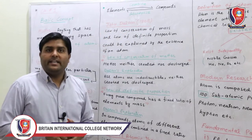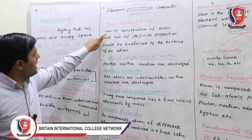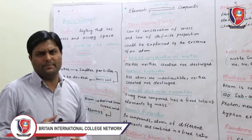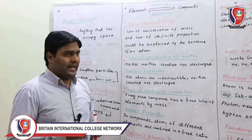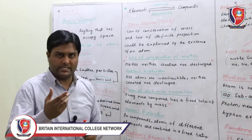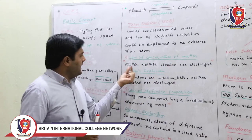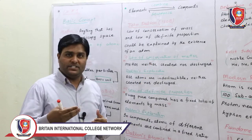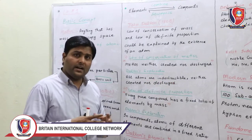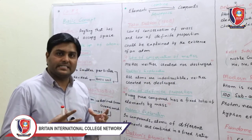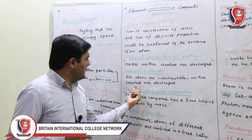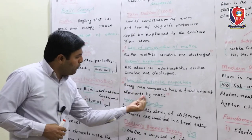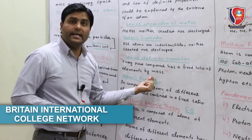After that, John Dalton came in 1808 — an English school teacher. He said that the law of conservation of mass and the law of definite proportion could be explained by the existence of an atom. The law of conservation of matter states that matter is neither created nor destroyed. Dalton explained that all atoms are indestructible. The law of definite proportion states that every pure compound has a fixed ratio of elements by mass.